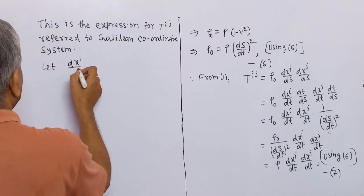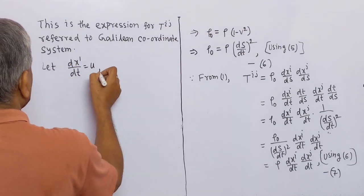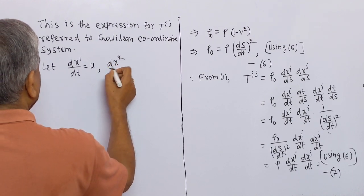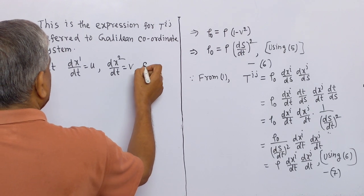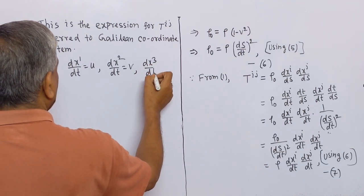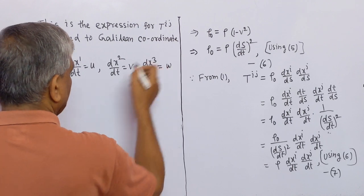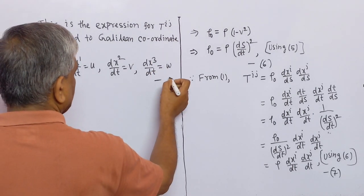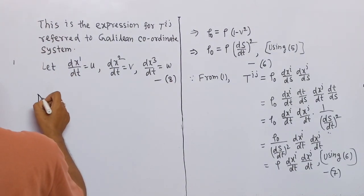Let dx¹/dt = u, dx²/dt = v, dx³/dt = w. This is equation (8). Now we find the individual components of the tensor.